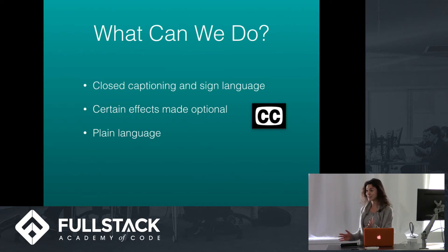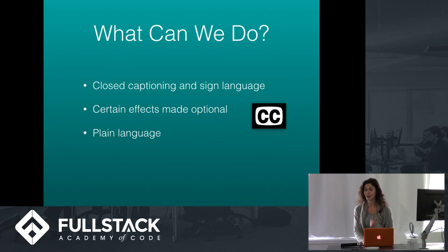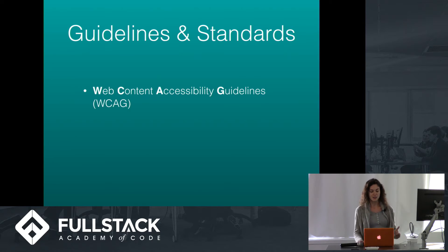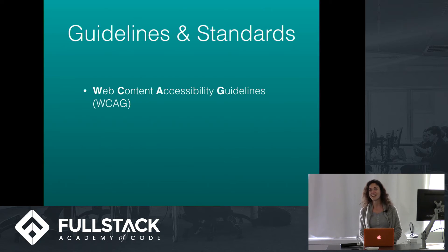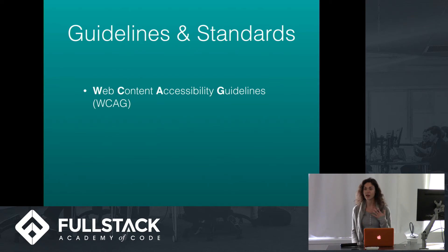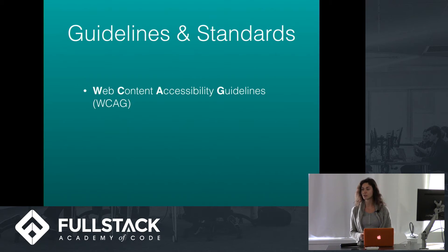Now that's a list of items we can do — let's talk about the guidelines that already exist that can help us do that, as well as current legislation that you might not be aware of. First we have the Web Content Accessibility Guidelines, created by the Web Accessibility Initiative of the World Wide Web Consortium, and they create most of the standards for all of our internet usage. These guidelines are very in-depth, and actually many policies, both public and private, are based off of them.